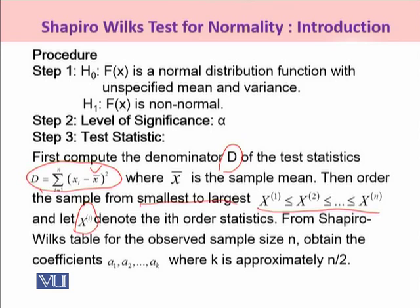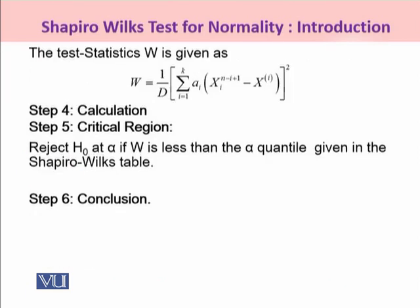From the ordered statistics, we pick up X(i) and from the Shapiro-Wilkes table, for the observed sample size N, we obtain the coefficients A1, A2, up to AK, where K is approximately N divided by 2. For example, if you have 20 observations, you will have 10 coefficients from the Shapiro-Wilkes table. Once you have picked up the coefficients, multiply them with the corresponding difference between the two order statistics: X(N-i+1) minus X(i) from your sampled ordered observations. Calculate this difference for each ordered value and multiply it with the corresponding coefficient.